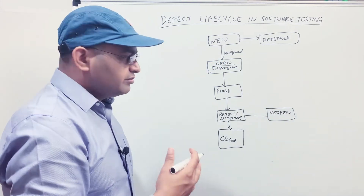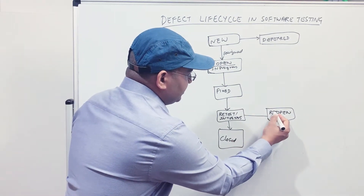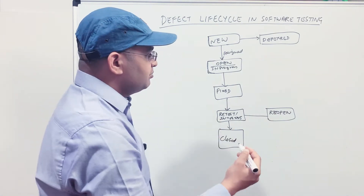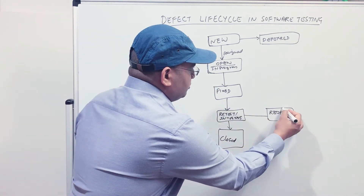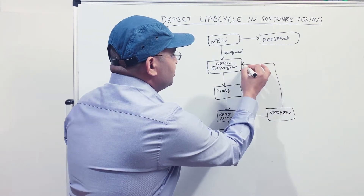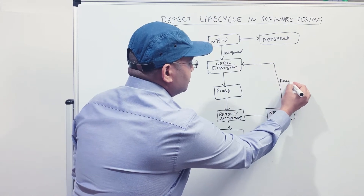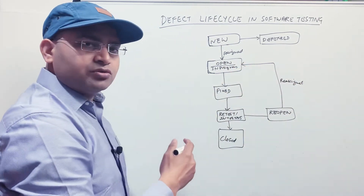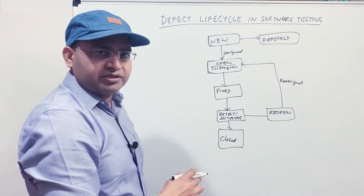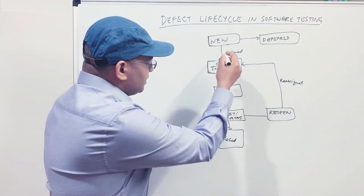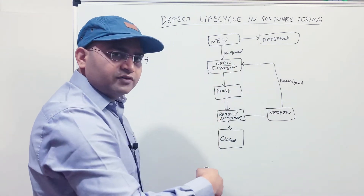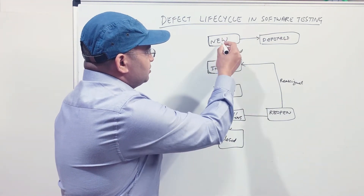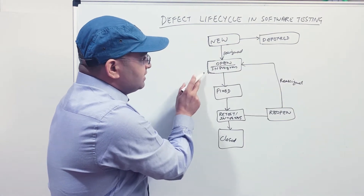If the retest fails — meaning you retested the defect and it still has issues — you will reopen the defect, moving it to the Reopen state. Once reopened, it needs to be reassigned back to the developer for fixing and moves again to the Open or In Progress state.